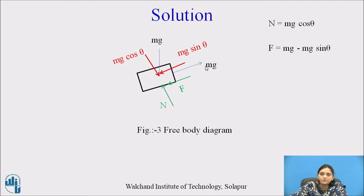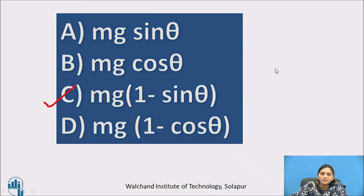F equals Mg minus Mg sin theta. This is the addition of all the horizontal forces. F equals Mg into 1 minus sin theta. So the frictional force is Mg in bracket 1 minus sin theta. This is the correct option.